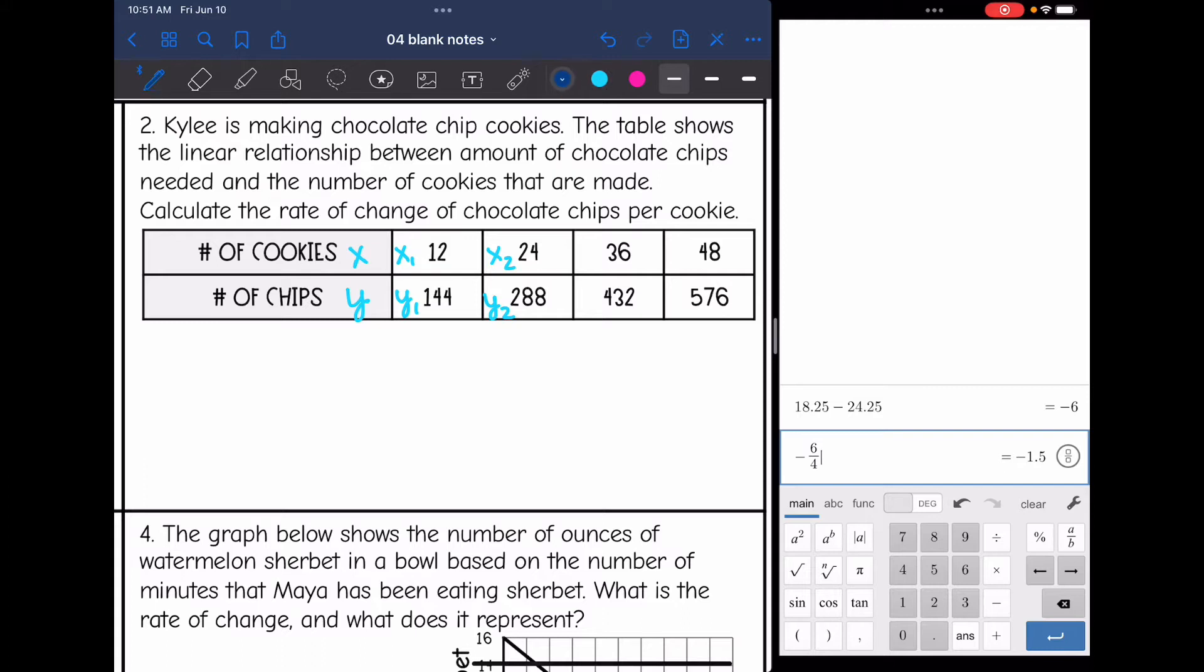So I labeled my x1, y1, x2, and y2. And now I'm going to plug into slope formula. It is y2 minus y1, so 288 minus 144, all over x2 minus x1, so 24 minus 12. So 288 minus 144 is 144. And then 24 minus 12 is 12. And 144 divided by 12 is 12. So that means that Kylie used 12 chips per cookie.